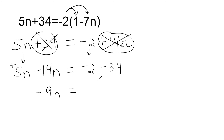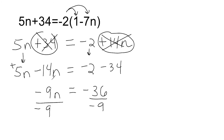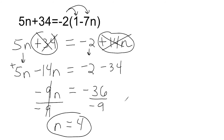On the right we have two negatives, so when we combine those we get negative 36. Now we divide both sides by our coefficient of negative 9, and that gives us n equals positive 4. Remember, a negative divided by a negative is always a positive.